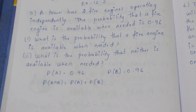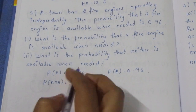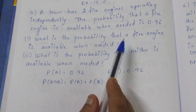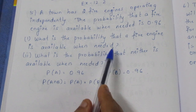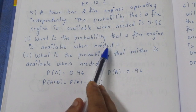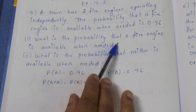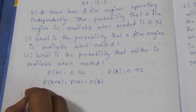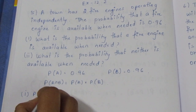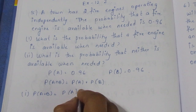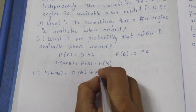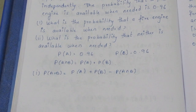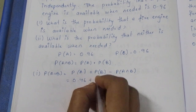Now the question asks: what is the probability that a fire engine is available when needed? For at least one of the two fire engines to be available, we use the union formula: P(A ∪ B) = P(A) + P(B) − P(A ∩ B). So that's 0.96 + 0.96 minus P(A ∩ B).